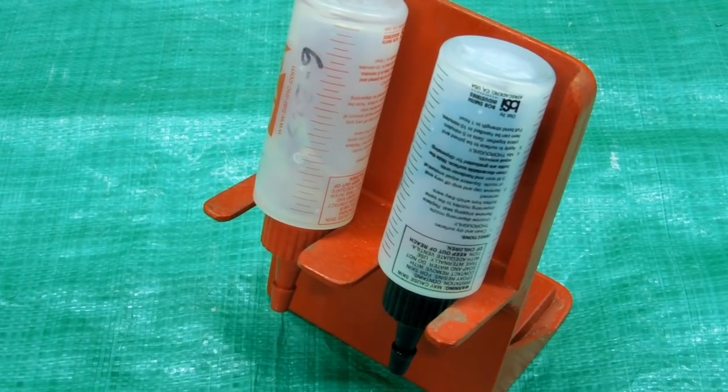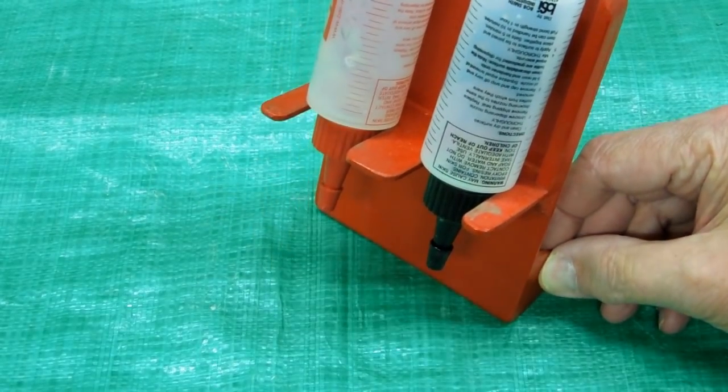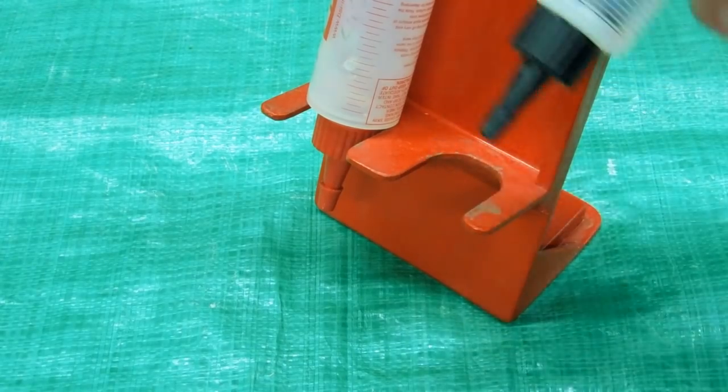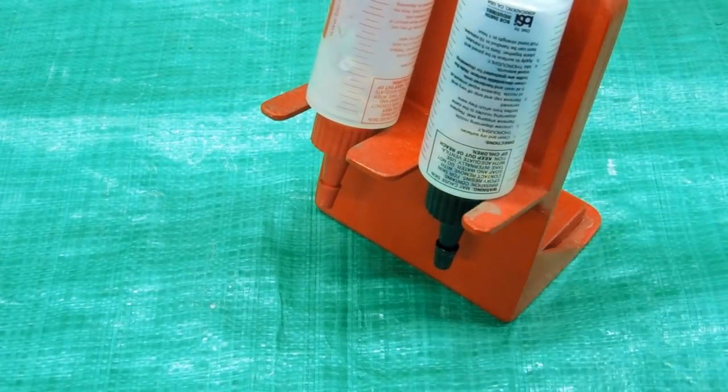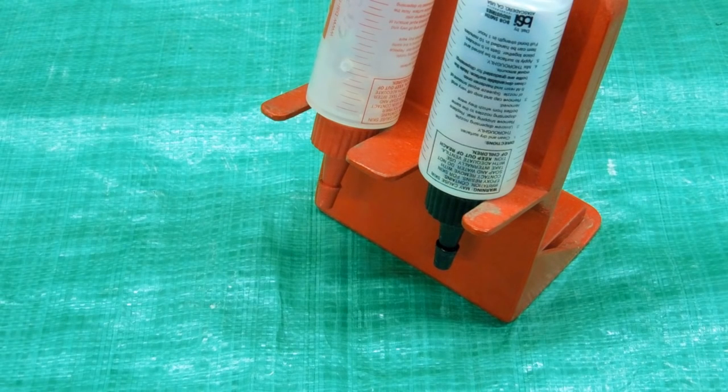Now when you're building your airplane, you take a bottle off here, pull the cap off, squeeze it into your mixing container, and all you need to do is remember to put the caps back on immediately.